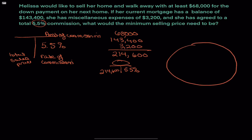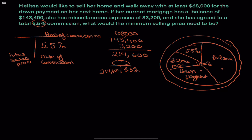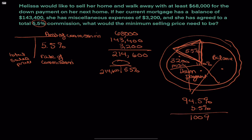Imagine the total sales price is 100% of what she needs. Within that 100%, Melissa needs to pay off the balance of her loan, she needs that down payment, and she needs the $3,200 in miscellaneous costs, plus there's the 5.5% commission. All of this together is 100%, which means if we add the balance, the down payment, and the $3,200, we're not including that 5.5%. So those three things add up to 94.5% of what she needs.